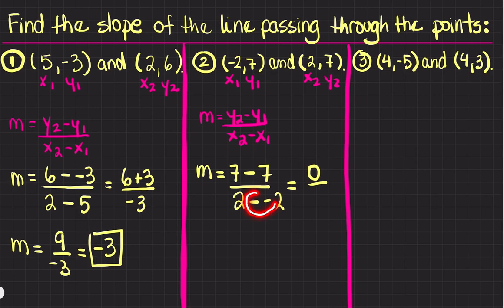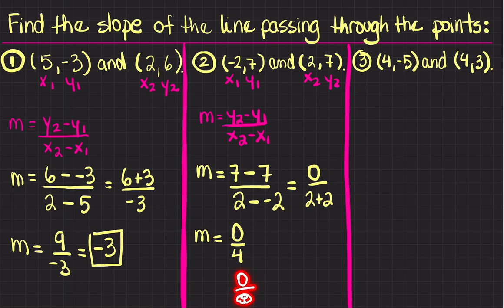Minus x1, which is negative 2. 7 minus 7 is 0, and again I have two negatives in a row, which is a positive, so 2 plus 2 equals 4. So m is equal to 0 divided by 4. You can have 0 divided by any number and that will always be 0, so the slope is 0. If you do it on your calculator, 0 divided by 4 is 0.